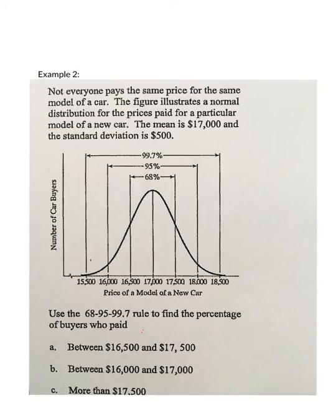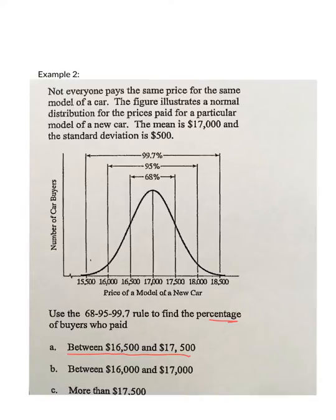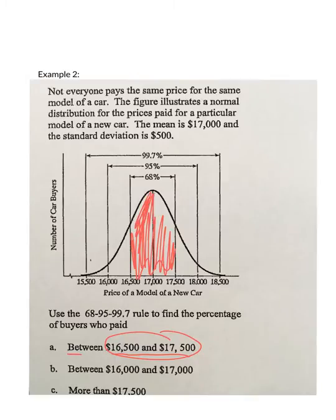Use the 68-95-99.7 rule to find the percentage of buyers who paid between 16,500 and 17,500. Shade the region the question refers to: 16,500 to 17,500 is one hop to the left from the middle and one hop to the right — that's always 68%. So the final answer to part A is 68%.